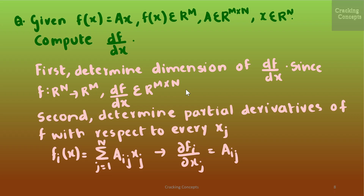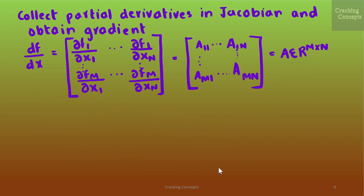Second, in order to compute the gradient, we determine the partial derivatives of f with respect to every xj. So fi = Σⱼ₌₁ⁿ aij xj, and therefore ∂fi/∂xj = aij. Now we collect all the partial derivatives in the Jacobian to obtain the gradient df/dx.